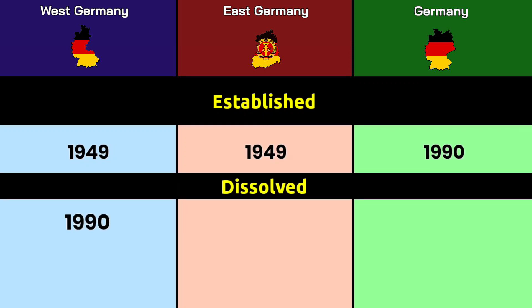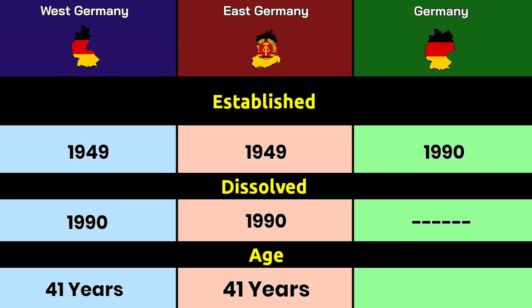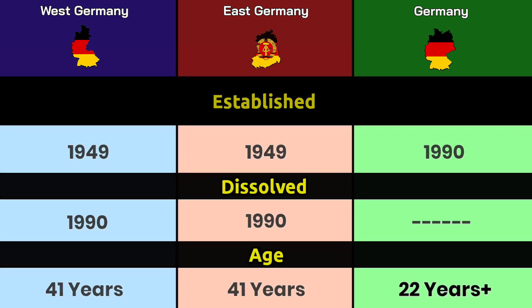Dissolved: both West Germany and East Germany were dissolved in 1990, while Germany has not been dissolved. Age: West Germany and East Germany each lasted 41 years, while modern Germany has existed for more than 22 years.